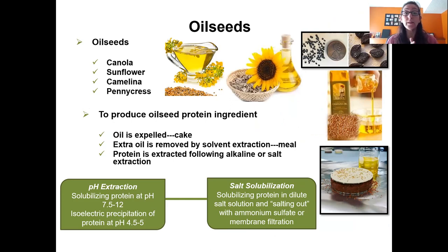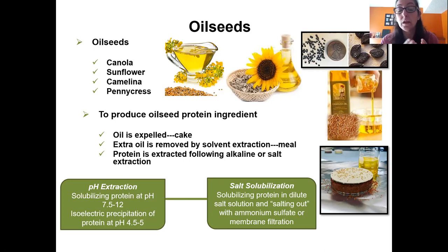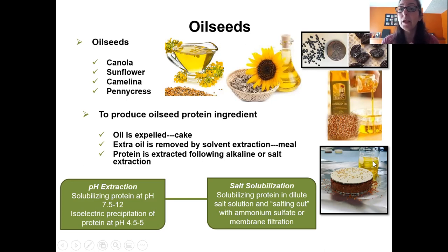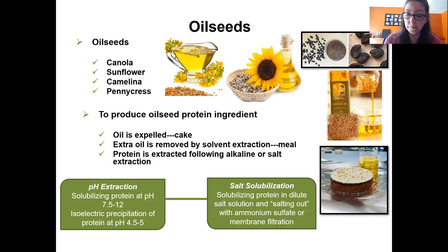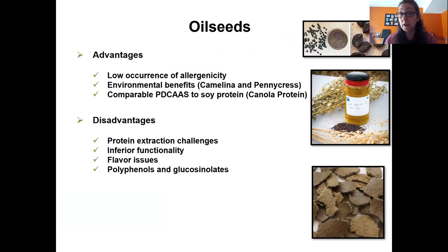Oil seeds like canola, sunflower, camelina, and pennycress are high in protein, oil, and fiber. Unlike starchy legumes, you first need to remove the oil — by pressing, which leaves residual oil in the cake. Then hexane extraction removes the remaining oil, leaving a meal rich in protein and fiber. That meal is then processed by either pH extraction or salt extraction, with pH extraction being most common currently.